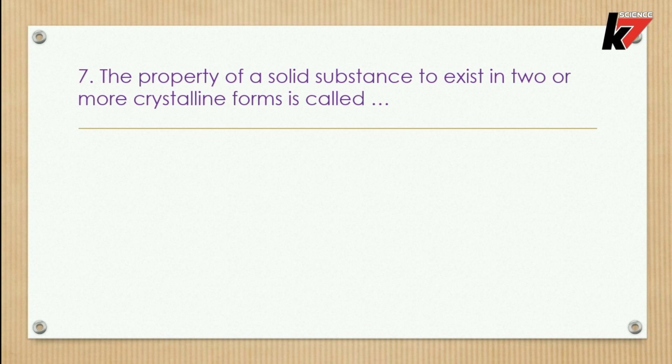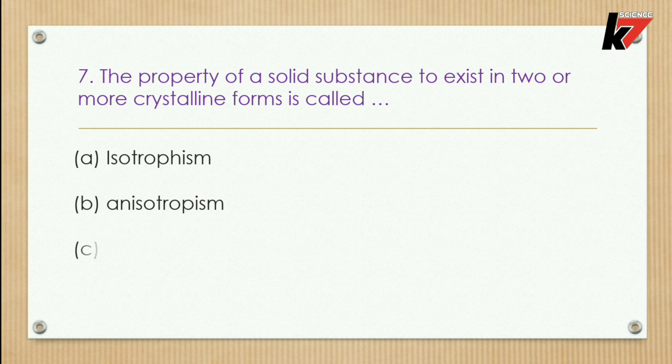Question 7: The property of a solid substance to exist in two or more crystalline forms is called — options: isotropism, anisotropism, polymorphism, or none of these. Two or more crystalline forms means polymorphism, so option C is correct.